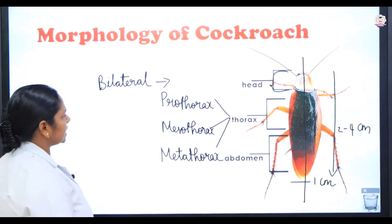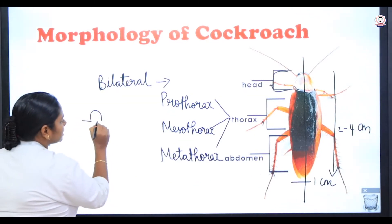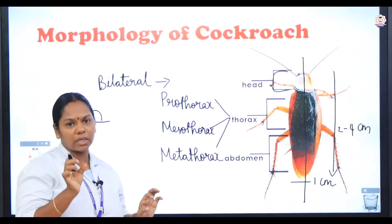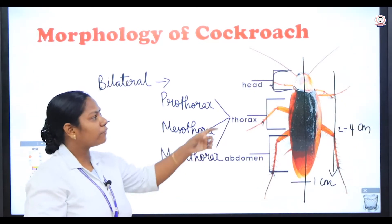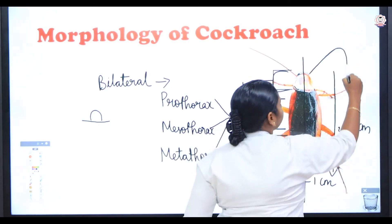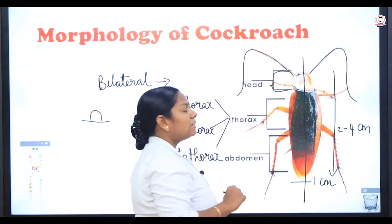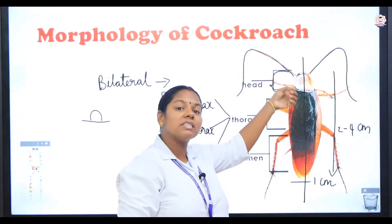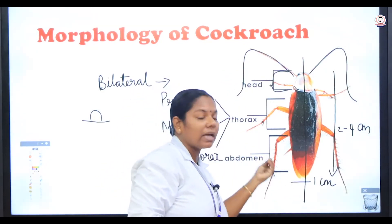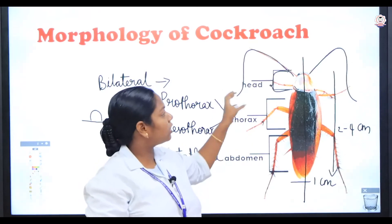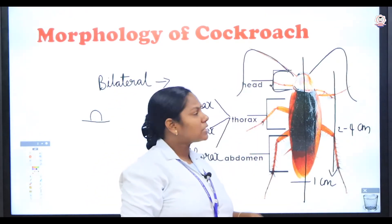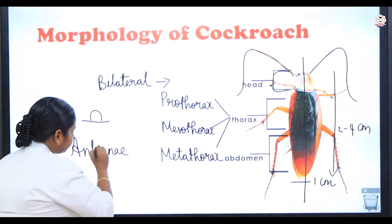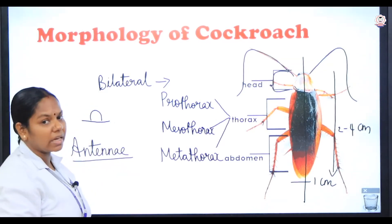The head is located at right angles to the body and is connected to the body by means of a short neck, so that the head is flexible. The head of the cockroach consists of a pair of antennae. By the length of the antenna we can determine whether it is a male or a female — if the antenna is very long and extends beyond the abdomen, it is a male; if the antenna is short, it is a female. The antenna is a sense organ helpful in absorbing vibrations.